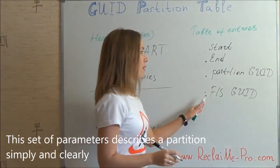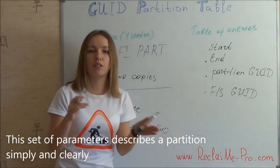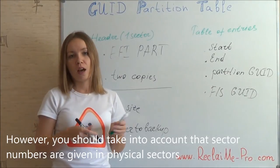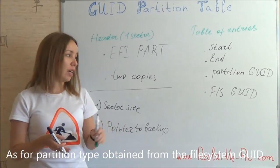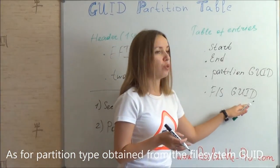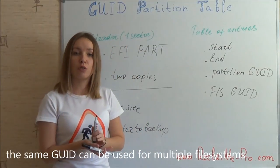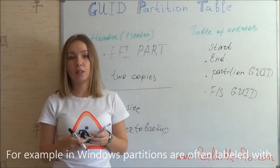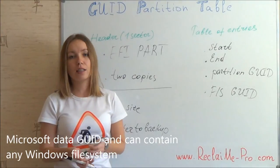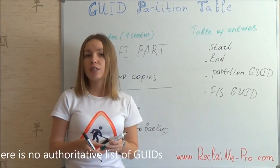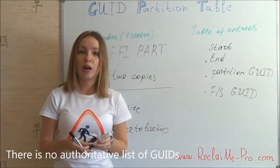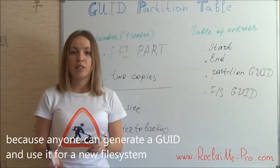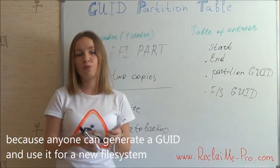This set of parameters describes a partition simply and clearly. However, you should take into account that sector numbers are given in physical sectors. As for partition type obtained from the file system GUID, the same GUID can be used for multiple file systems. For example, in Windows, partitions are often labeled with the Microsoft Data GUID and can contain any Windows file system. There is no authoritative list of GUIDs, and more than that, it just cannot exist, because anyone can generate a GUID and use it for a new file system.